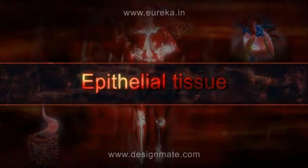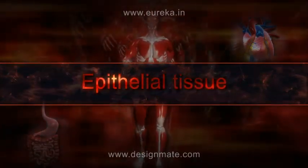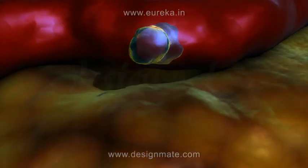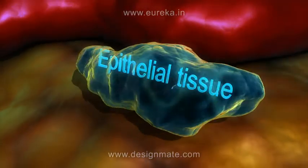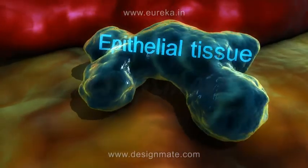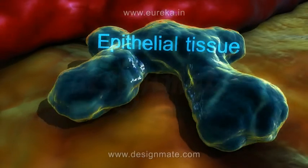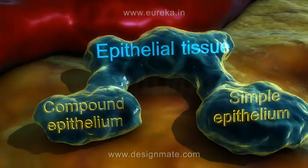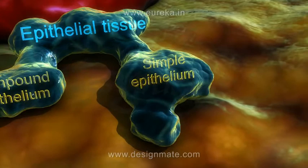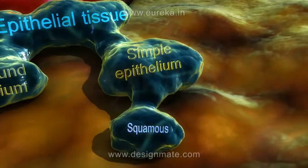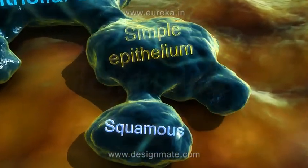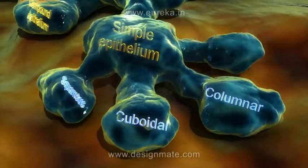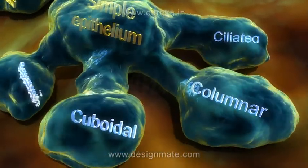Epithelial tissue can be divided into simple epithelium and compound epithelium. Simple epithelium can again be divided into squamous, cuboidal, columnar, and ciliated.